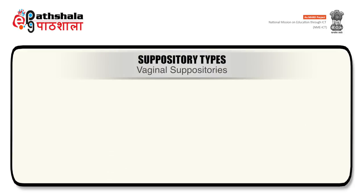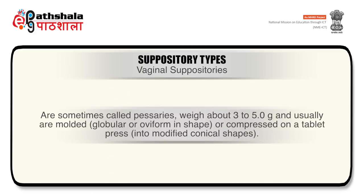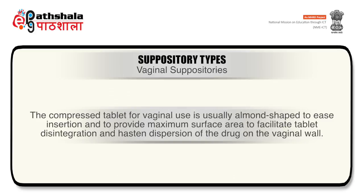Vaginal suppositories, sometimes also called pessaries, weigh about 3 to 5 grams and are usually globular or oviform in shape. They can also be compressed on a tablet press into modified conical shapes. The compressed tablet for vaginal use is usually almond shaped to ease insertion and to provide maximum surface area to facilitate tablet disintegration and hasten dispersion of the drug on the vaginal wall.